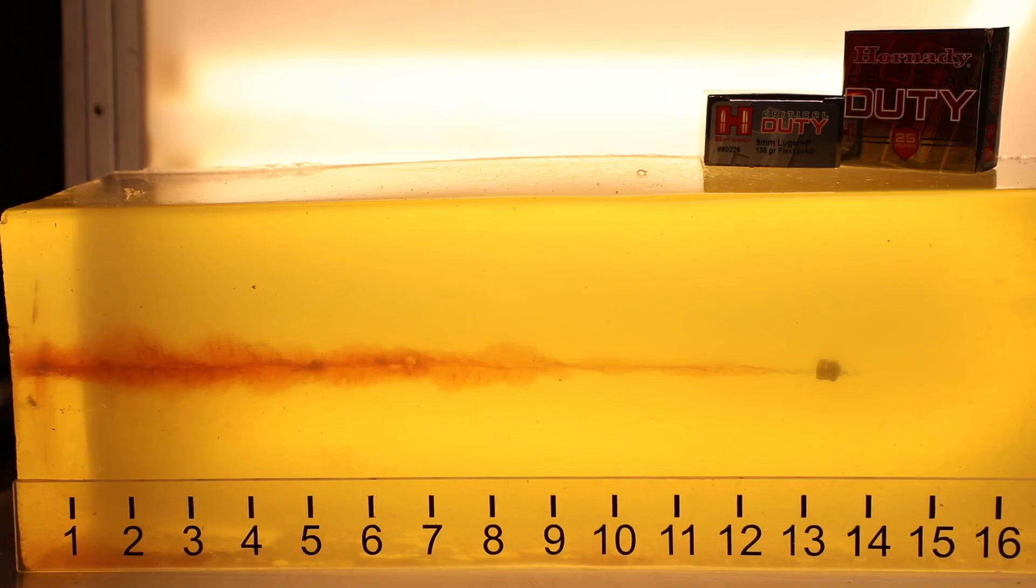So here we have the expanded bullet through glass. Now this bullet will expand as it goes through the glass. So we're trying to get the expanded material to shed from the bullet before it enters the gelatin.